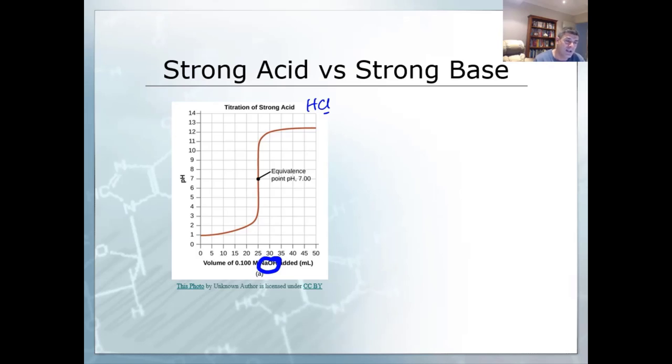If you're carrying out a titration and you don't have a pH meter or a pH probe, you're not going to know what's going on here. So you have to use an indicator in order to try and identify what's going on.